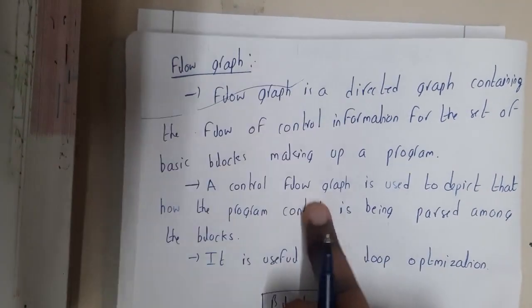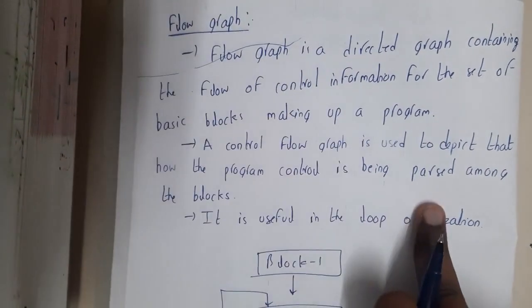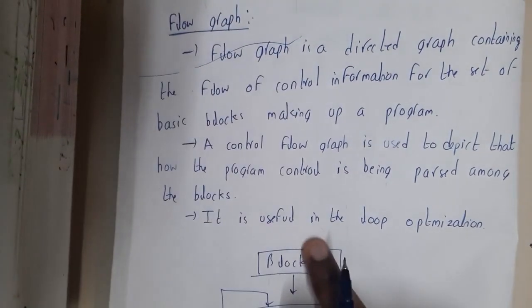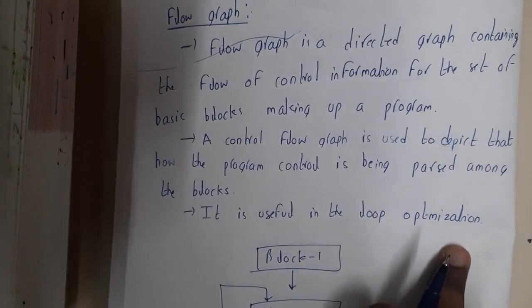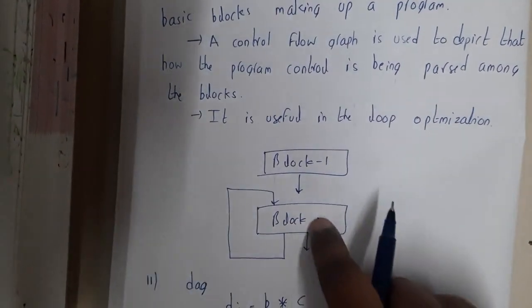A control flow graph is used to depict how the program control is being passed among the blocks. This is used in loop optimization.